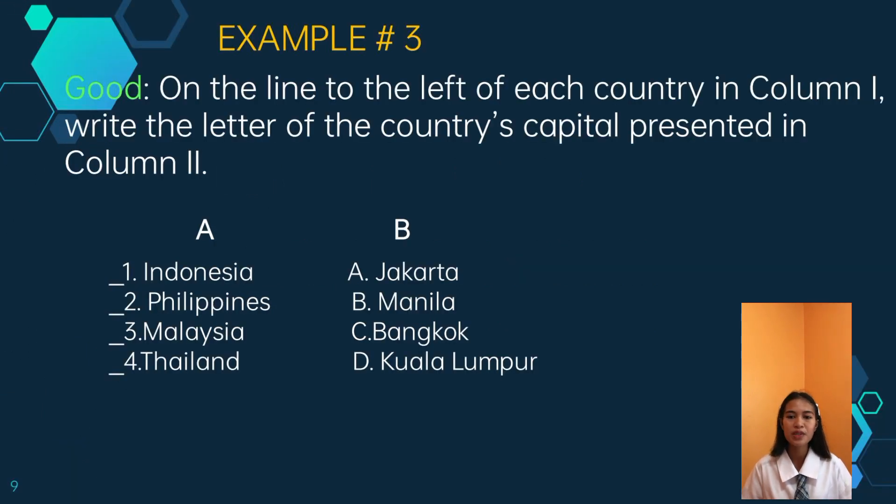Column A represents the country and column B represents the country's capital. In this example, the details of basis for matching and the response options only include related concepts. Philippines matched to Manila, Thailand matched to Bangkok, Malaysia is Kuala Lumpur, and Indonesia for Jakarta.